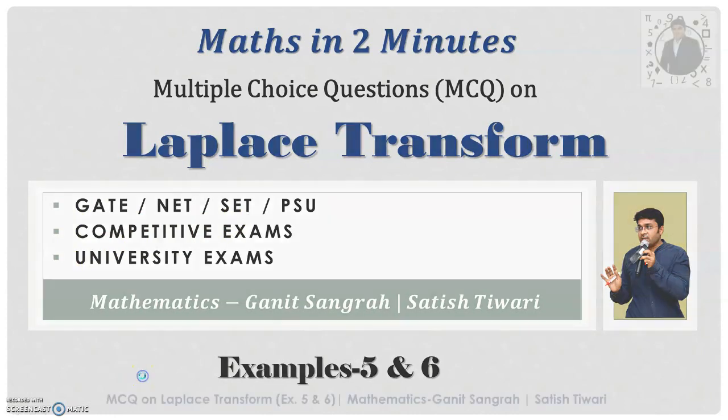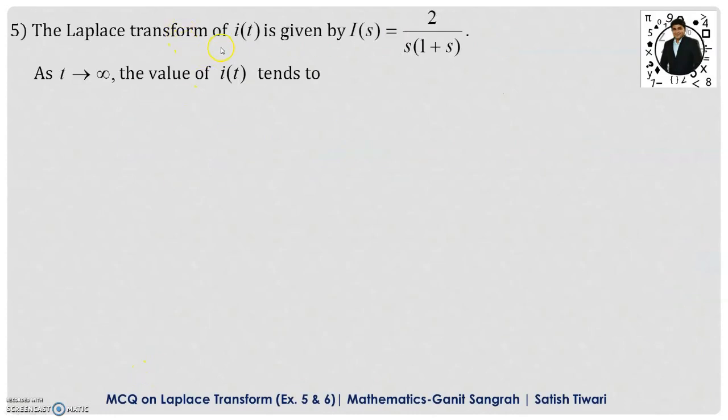We will see example number 5 and 6 here. Example number 5: The Laplace transformation of i(t) is given by I(s) equals 2 upon s into 1 plus s. As t tending to infinity, the value of i(t) will tend to. These 4 options are with us.